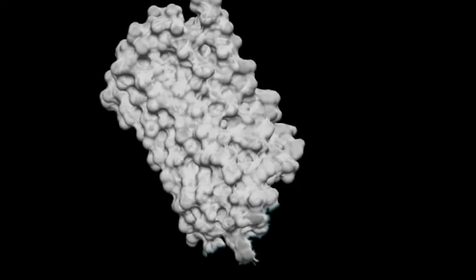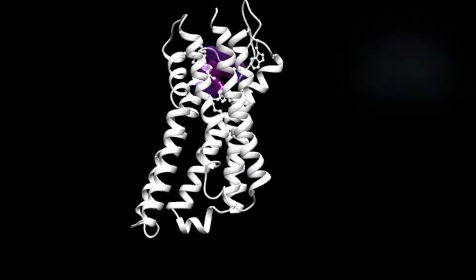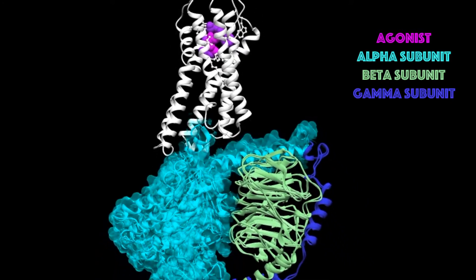This part is the receptor itself with seven helices which go through the membrane. On the outside of the cell there is a cavity to which an agonist like an opioid binds. On the intracellular side the receptor is coupled to a G protein which has an alpha, beta, and gamma subunit.